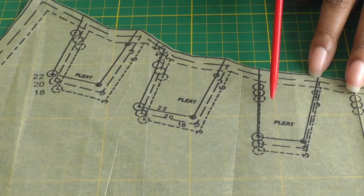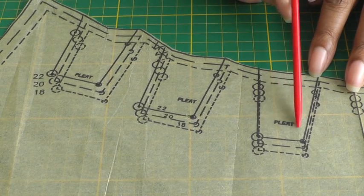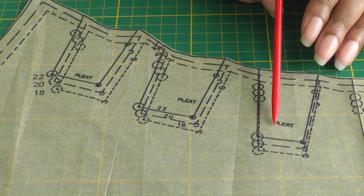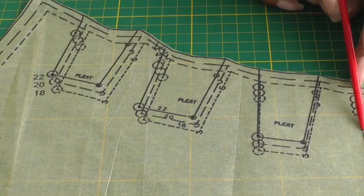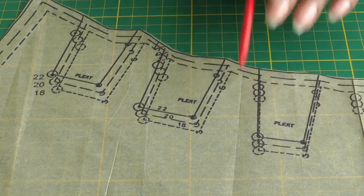In some sewing patterns they also give an arrow for the direction of where the pleat is going to lie, whether it's going to lie towards the center front or away from the center front.